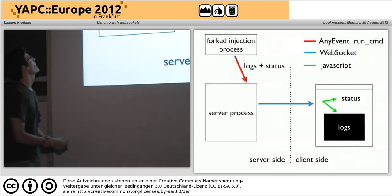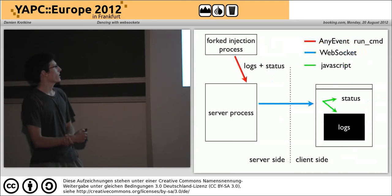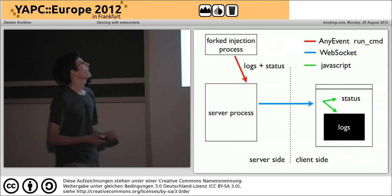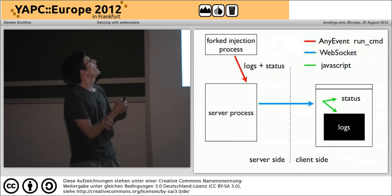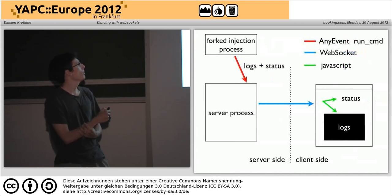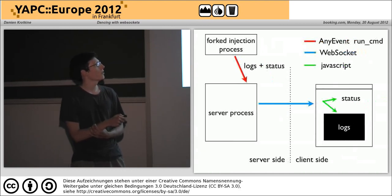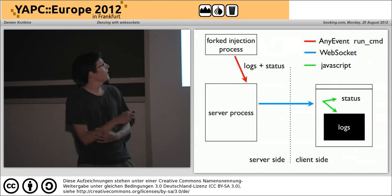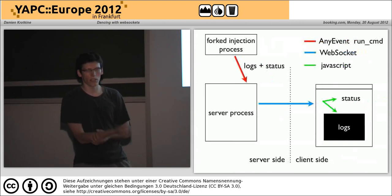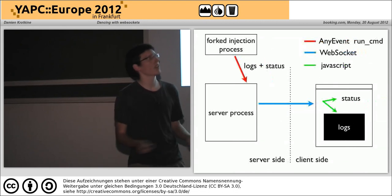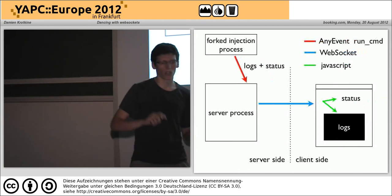Here is a nice diagram. Basically we have our web server process on the server side. At some point, when the user decides to inject something into our local CPAN mirror, it will fire a fork process, gathering all the standard output. Using AnyEvent, it's very easy to do. Then this standard output is sent to the client using WebSocket, and the client with JavaScript will update the log frame. It will also update the status, because the process knows when it starts, finishes, and when it fails. I made this process output special lines to the standard output that are detected to change the status.